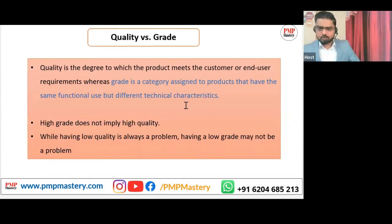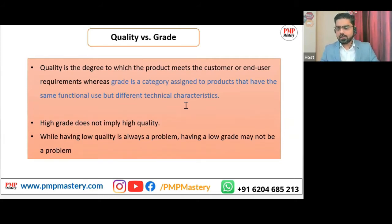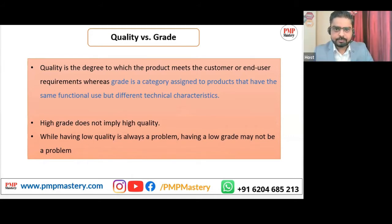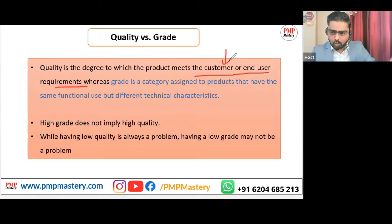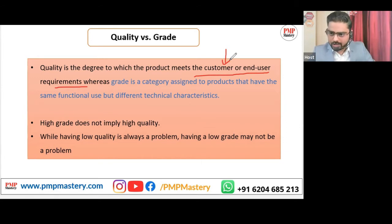There is quality versus grade. Quality is the degree to which the product meets the customer or end user requirements. It is not talking about any standard, any documents, any ISO. ISO is their own — they have created the standard guidelines. As per your organizational requirements, you can take references from those ISO standards and create your own product or project requirements.